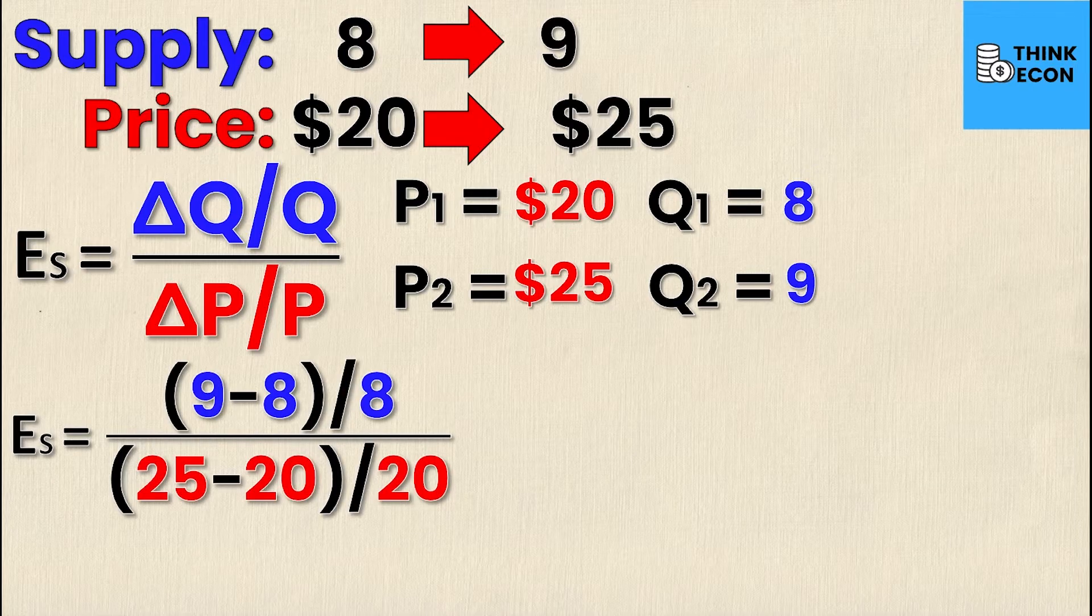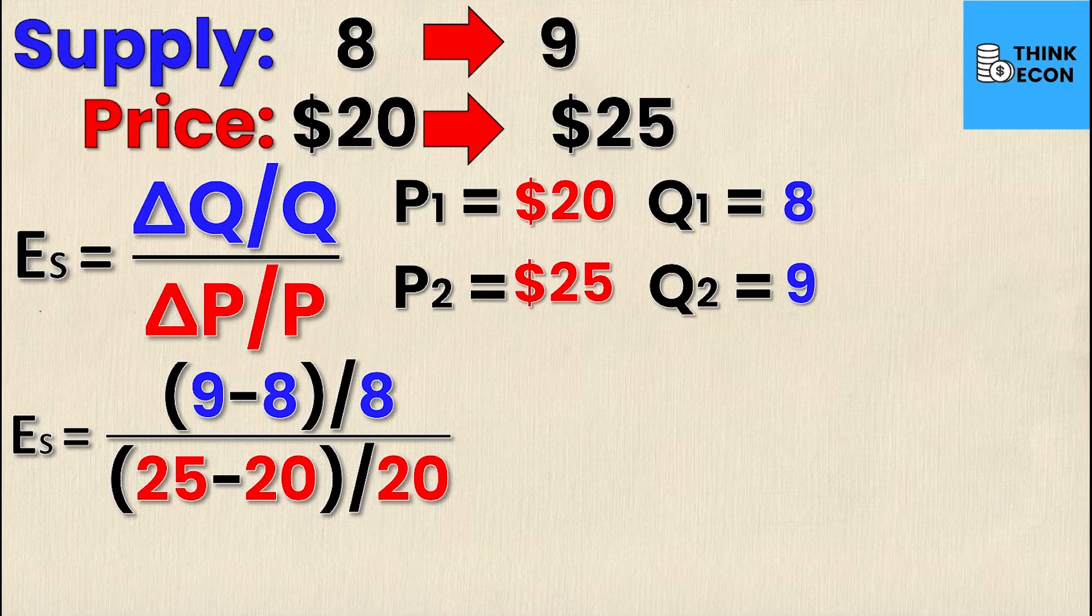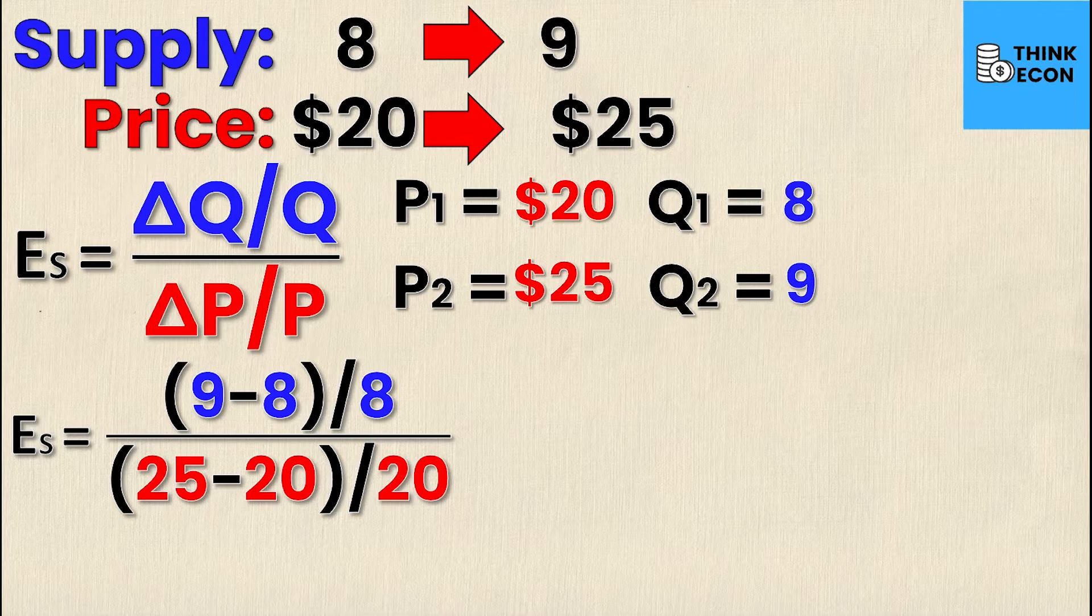Elasticity of supply is equal to the new quantity supplied, 9, minus the old quantity supplied, 8, divided by the old quantity supplied, which is 8. And then we do the exact same thing for price: new price of 25 minus old price 20 over old price 20.